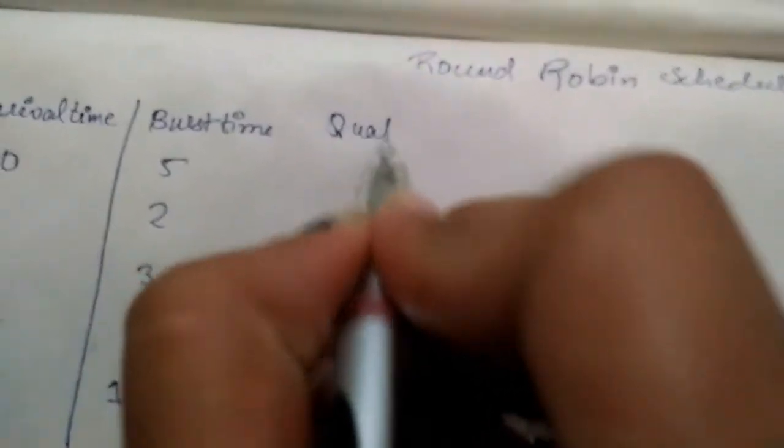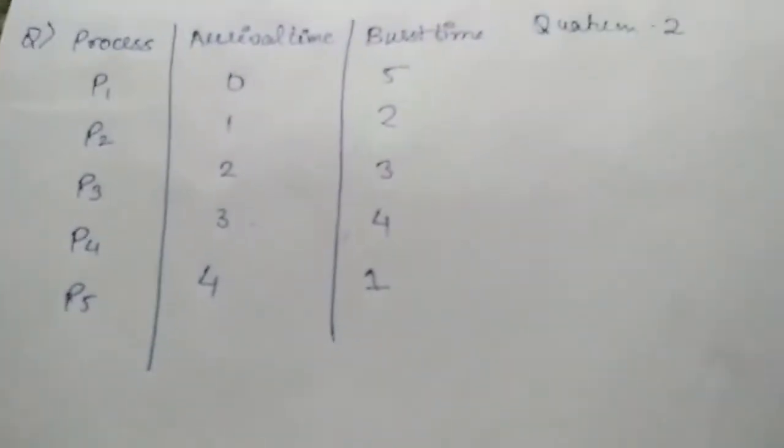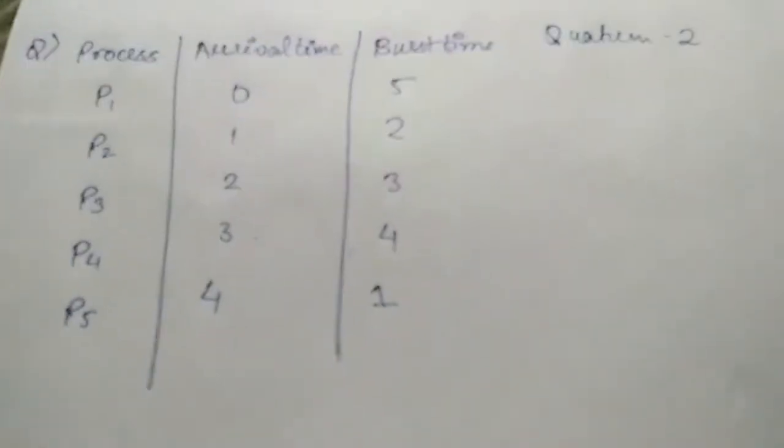As we said, once the quantum time is over, the process will be preempted. So for this question, the quantum time is set to two. We have five processes with their arrival time and burst time.